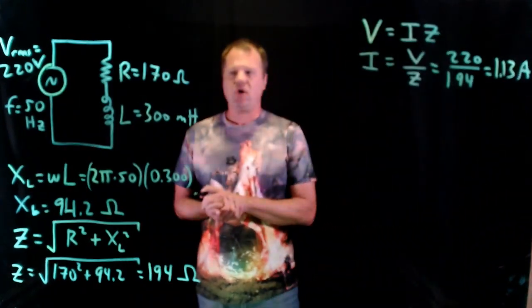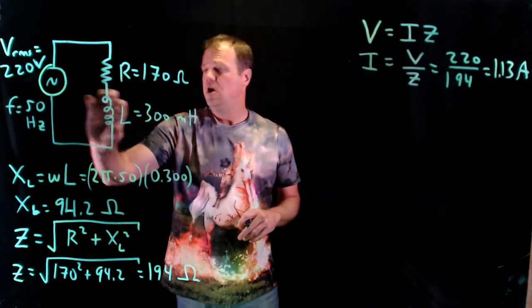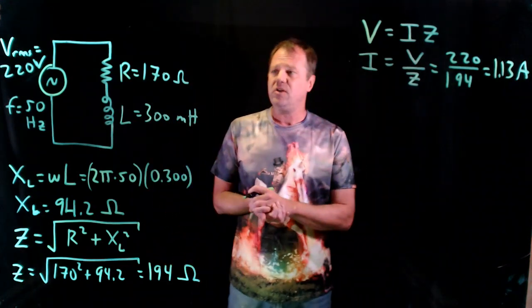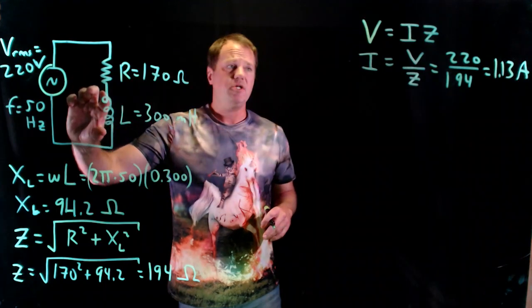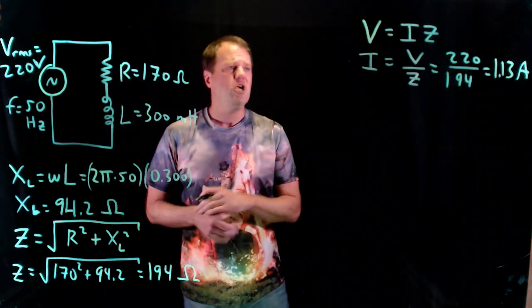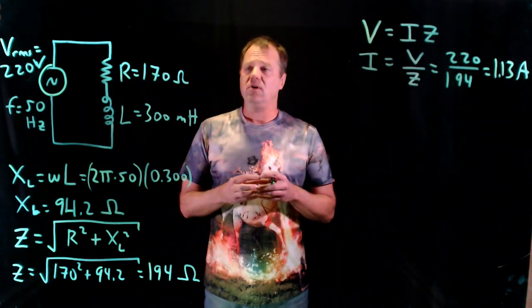So I've got the current through, that's actually the current of everything: current of the resistor, current of the inductor, current of the power supply. Now I'm going to look at these each as individuals. As I said before, I wanted to find the voltage of each. I've got the current of each, it's all 1.13 amps, but I need the voltage. Now I'm going to apply Ohm's Law to each of those individually.